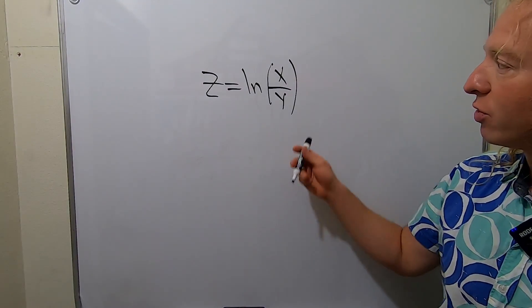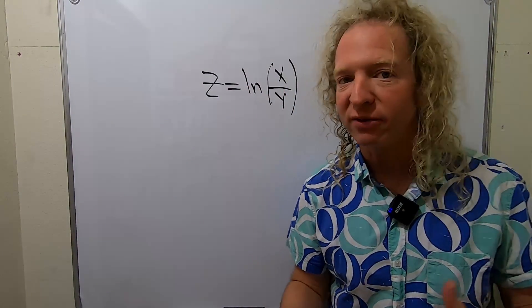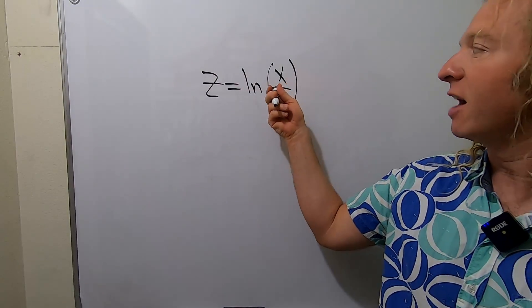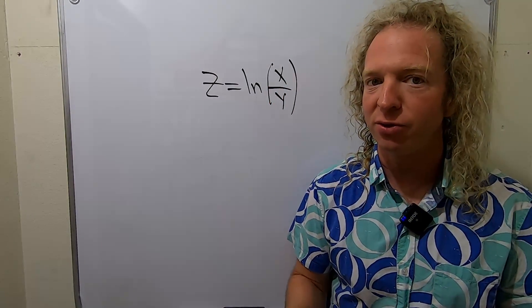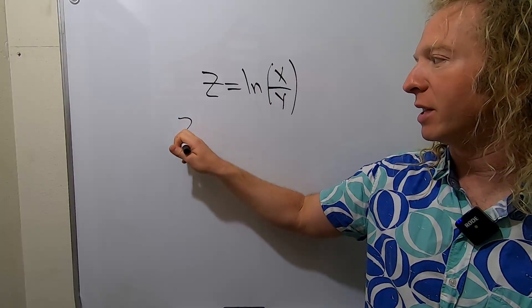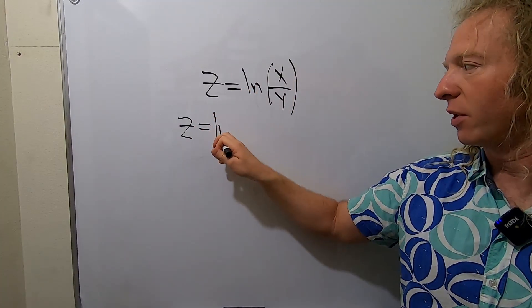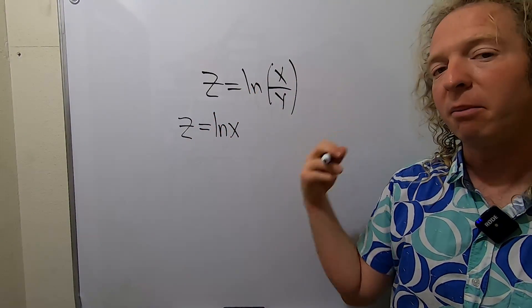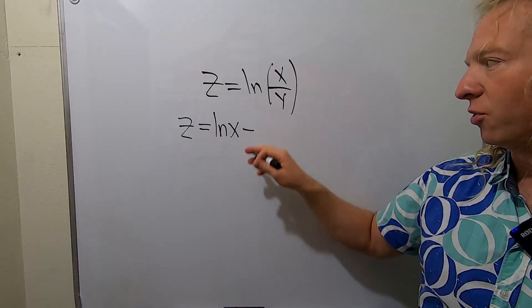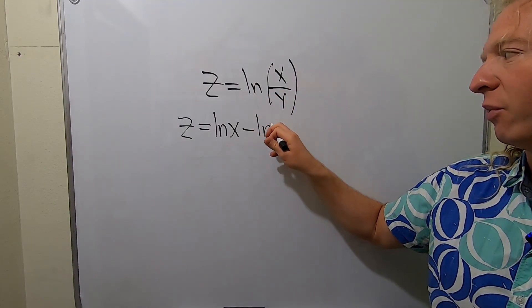Before we do this, we're going to rewrite this function using the properties of logarithms. Because we have a fraction, it's going to turn into subtraction. So we'll rewrite it as z equals natural log of the top piece, ln of x, minus natural log of the bottom piece, ln of y.